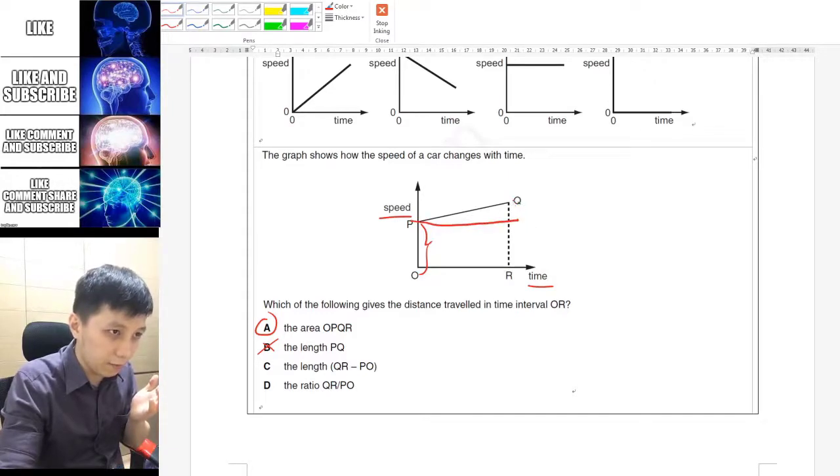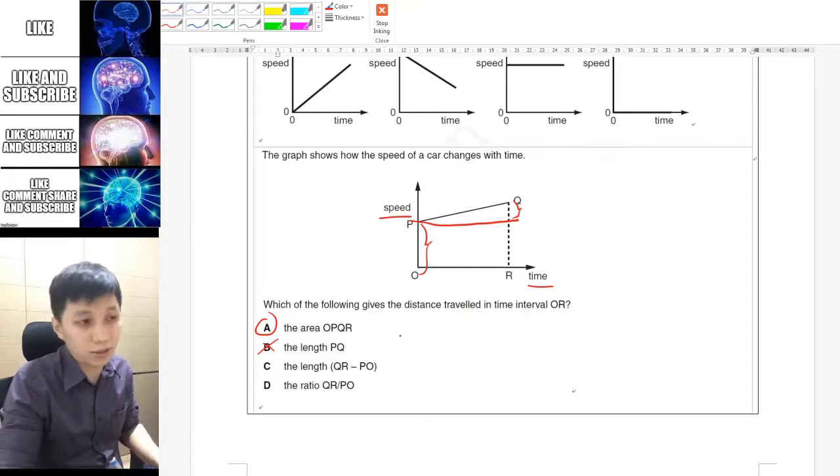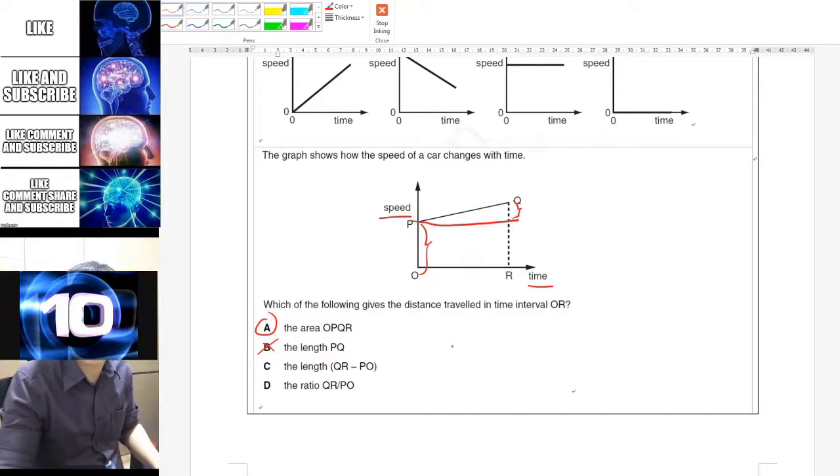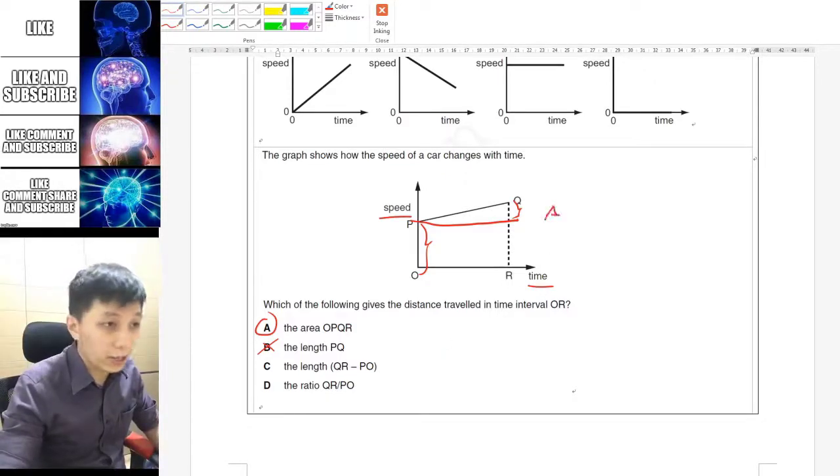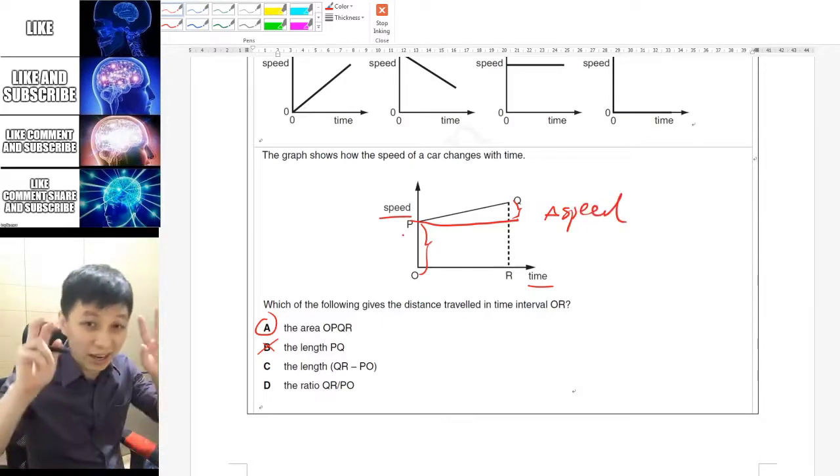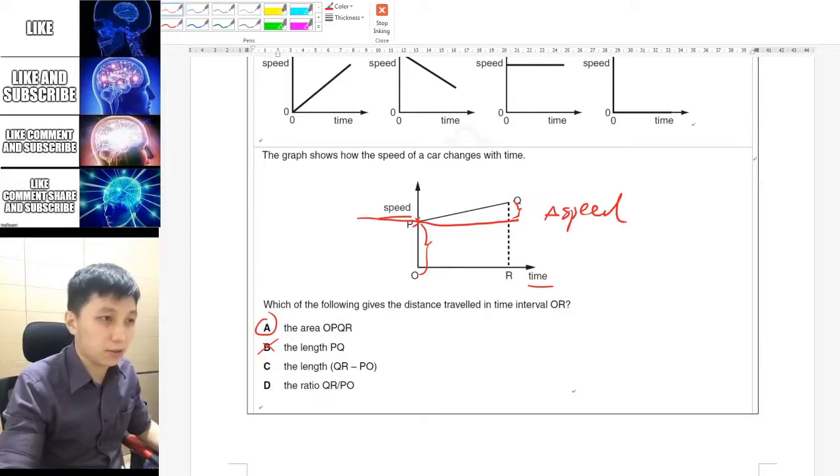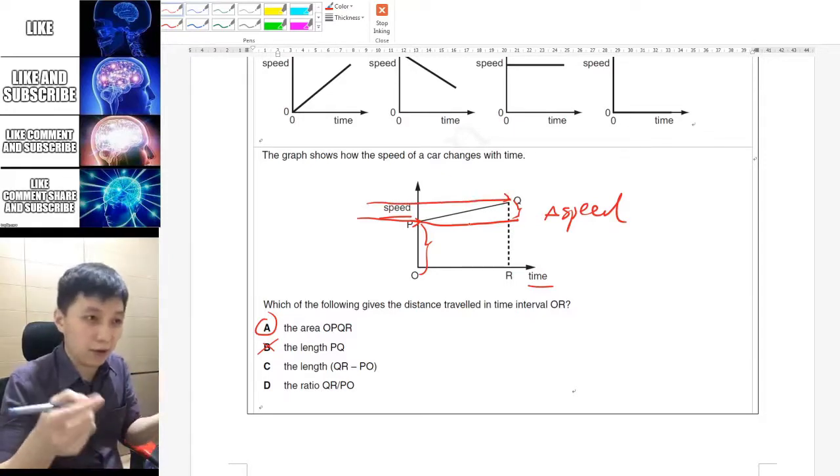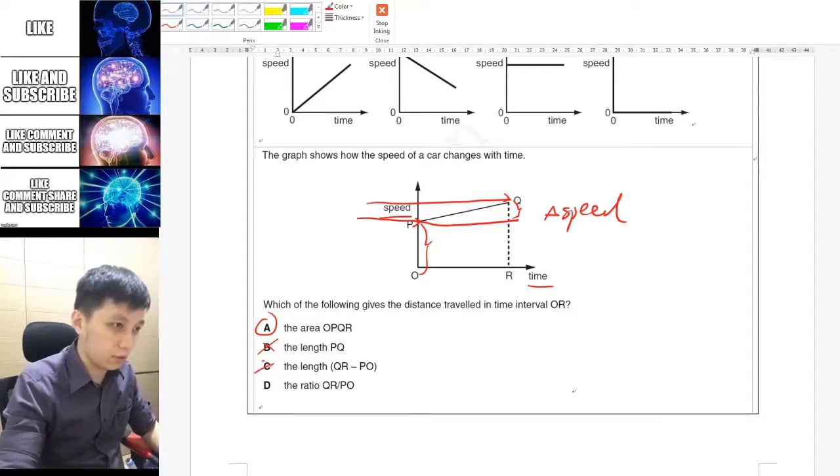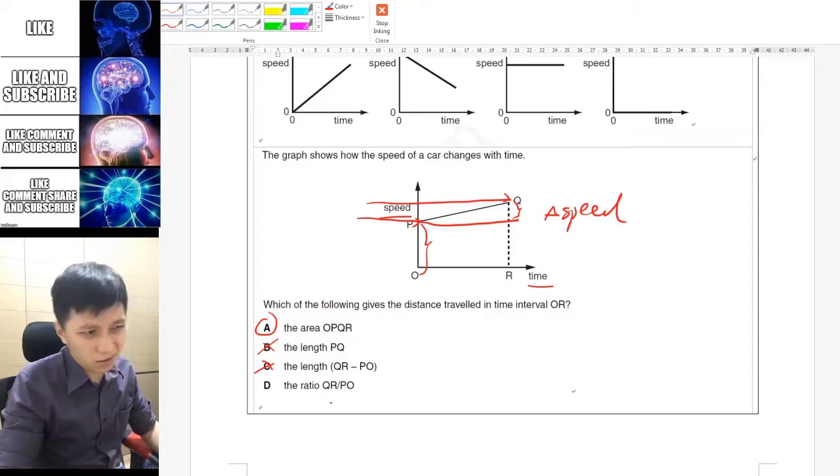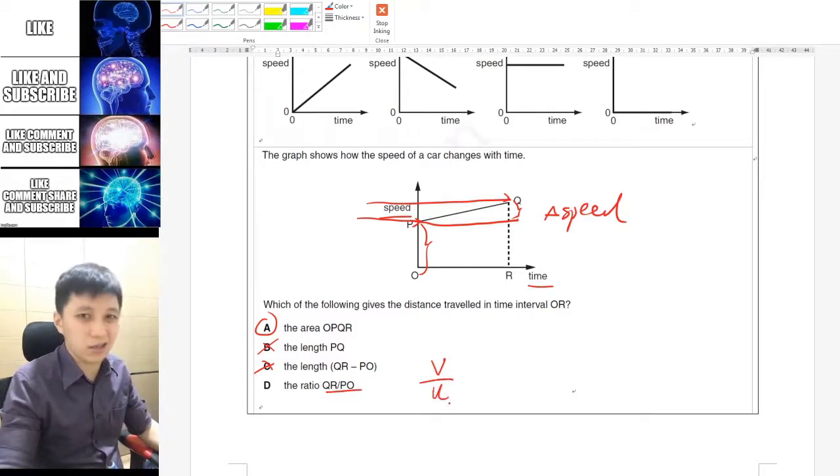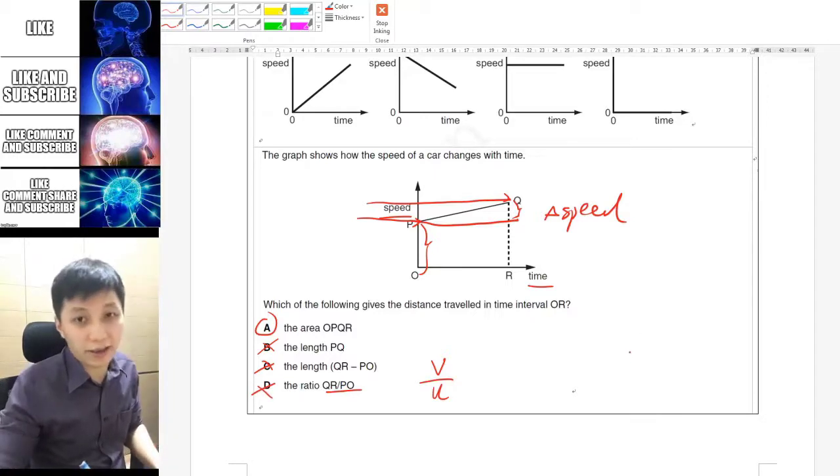For the length QR, that means this one minus PO, so actually that means it is the length of this one. This one is actually meaningful. Do you know what that means in physics? The answer is change of speed. If you look at the so-called length of PQ, that's basically the value of this point. For QR, that's basically the value of Q. If you minus them, then you'll find the change of speed. That of course is not the distance traveled. Lastly, this one means nothing really, so the only possible answer is A.